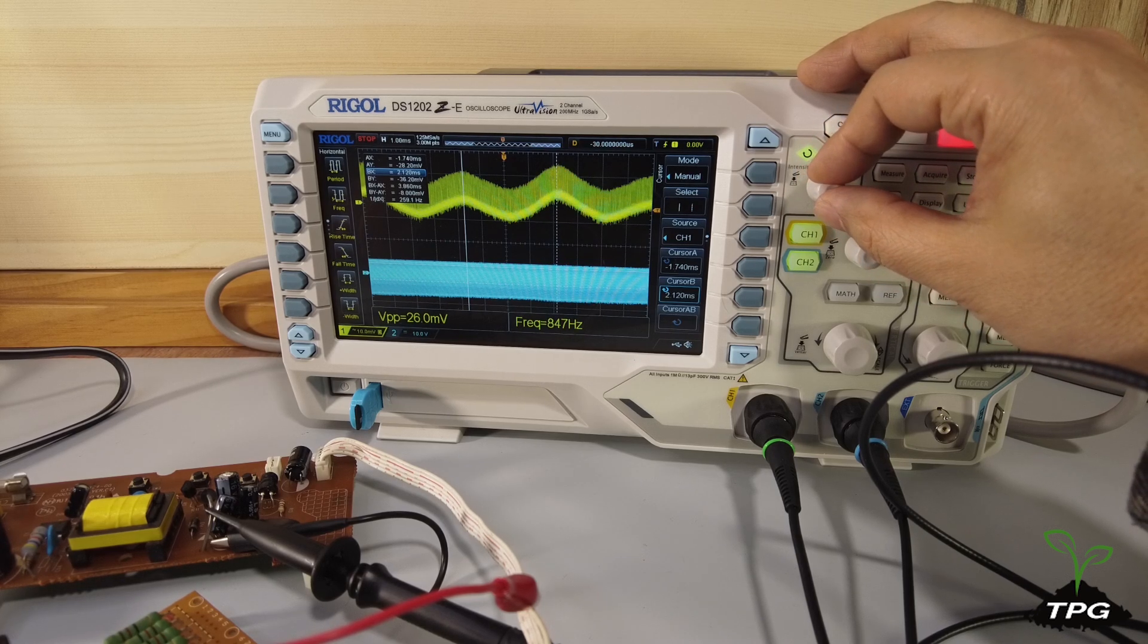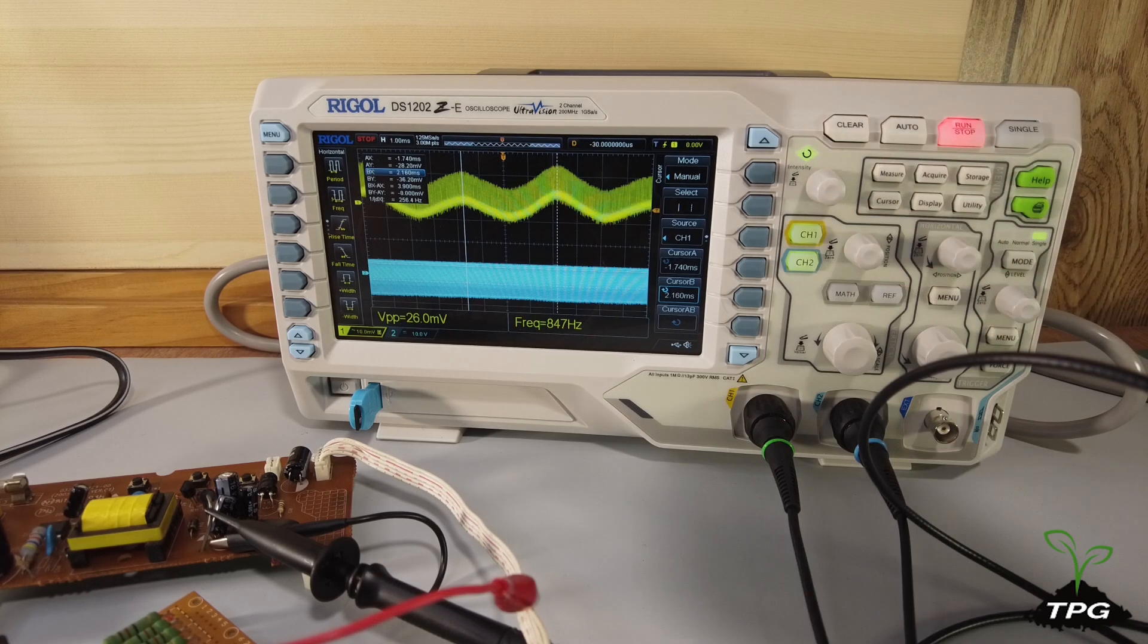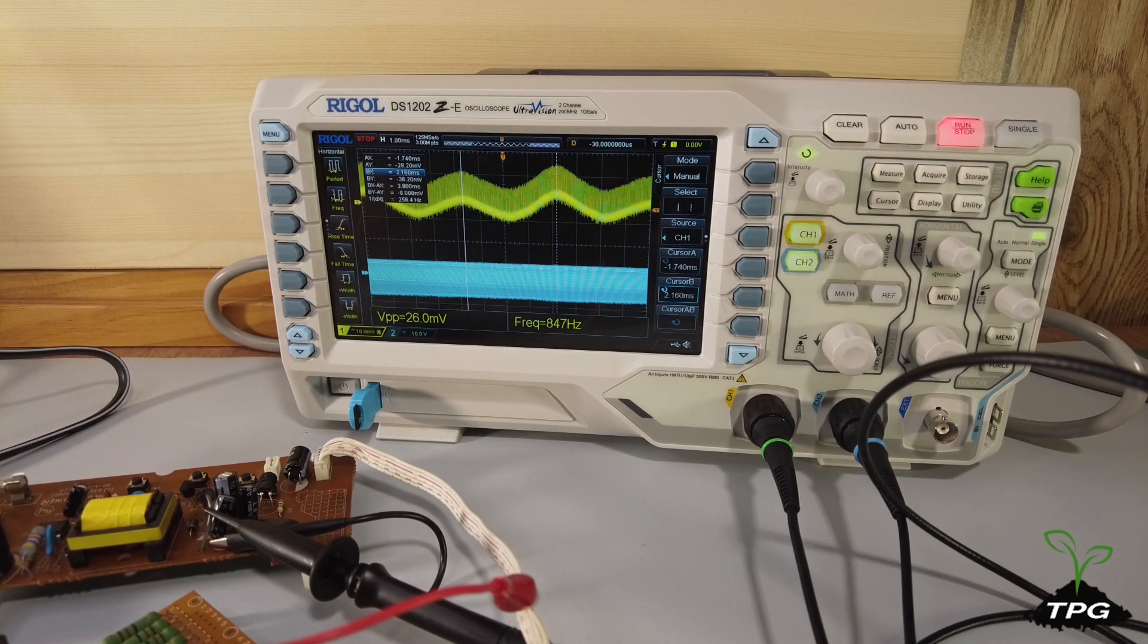The ripple voltage frequency, primarily influenced by the switching frequency of the SMPS, is approximately 250 Hz.